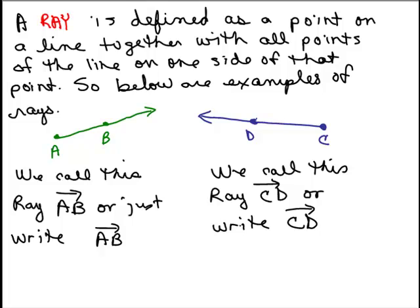Now that we know what a line is, what's a ray? A ray is defined as a point on a line together with all points of the line on one side of that point. So I have a point A and a B with an arrow going one direction. A ray just starts at A, goes through B, and keeps going. We call this ray AB.